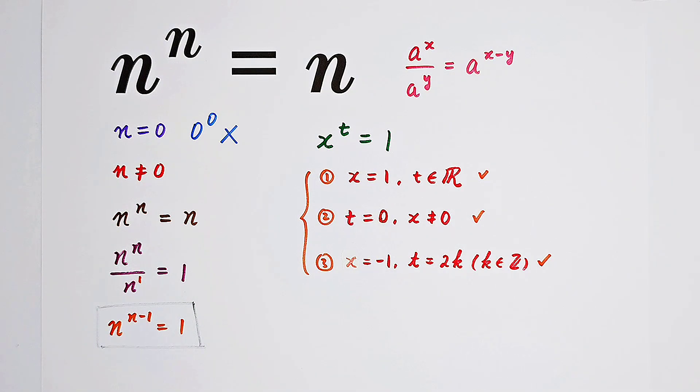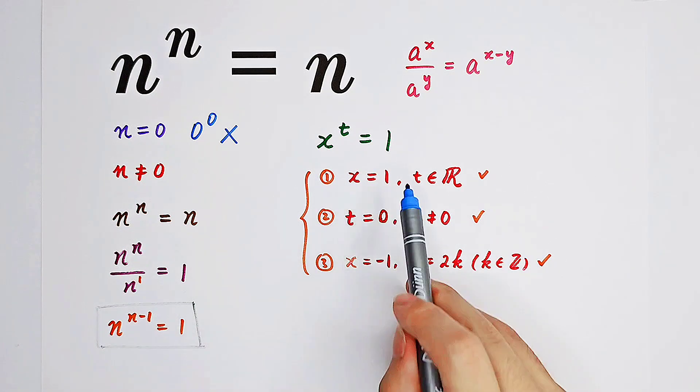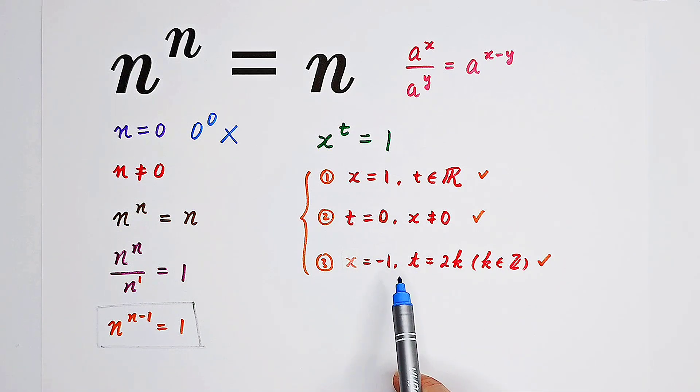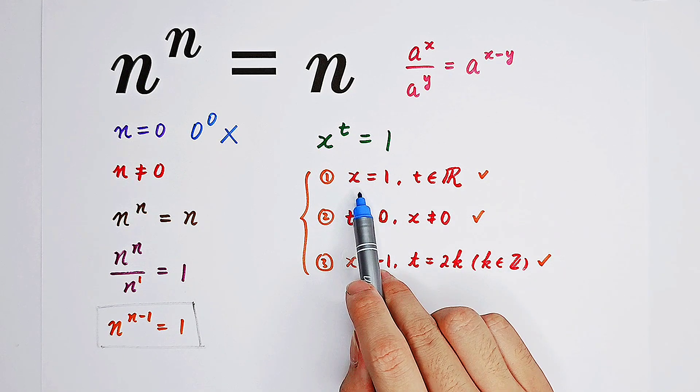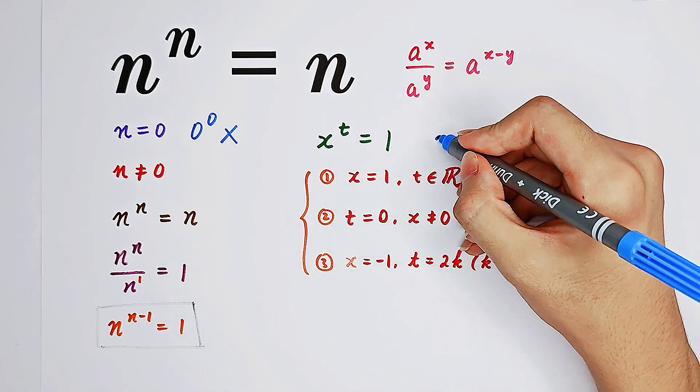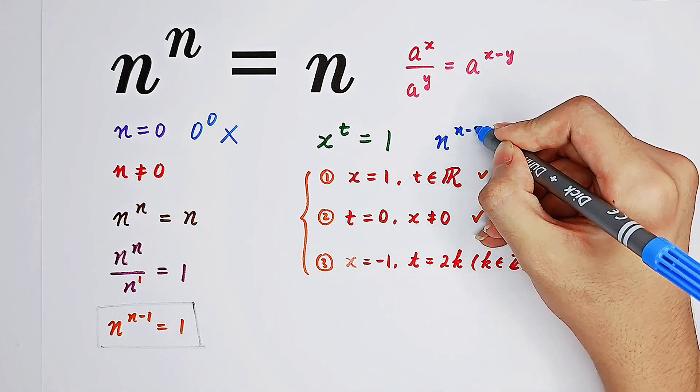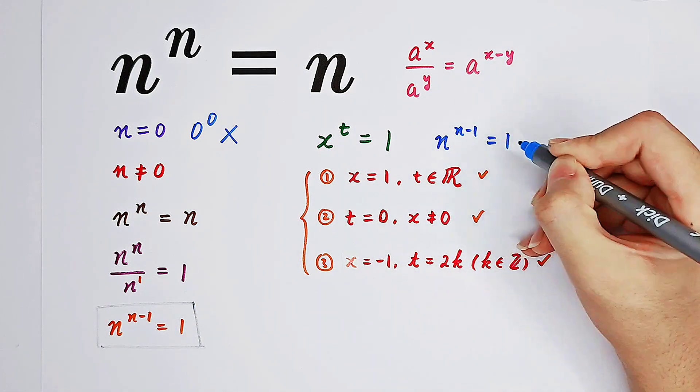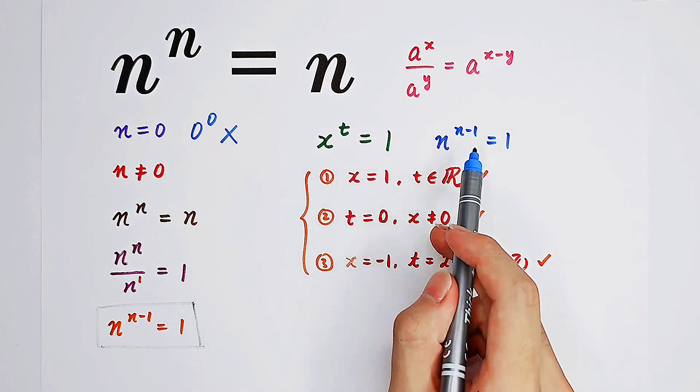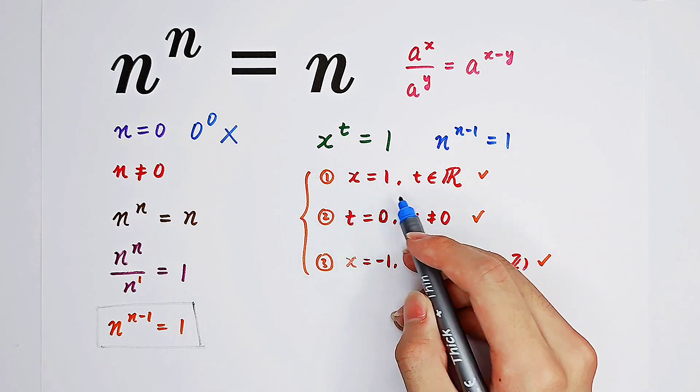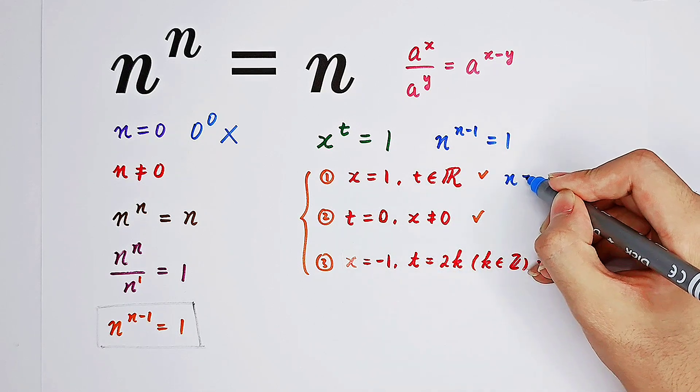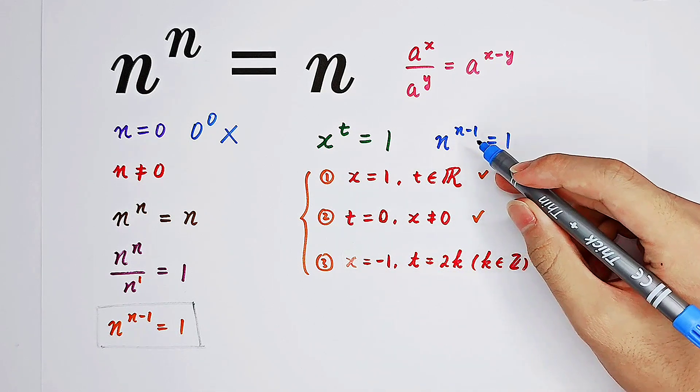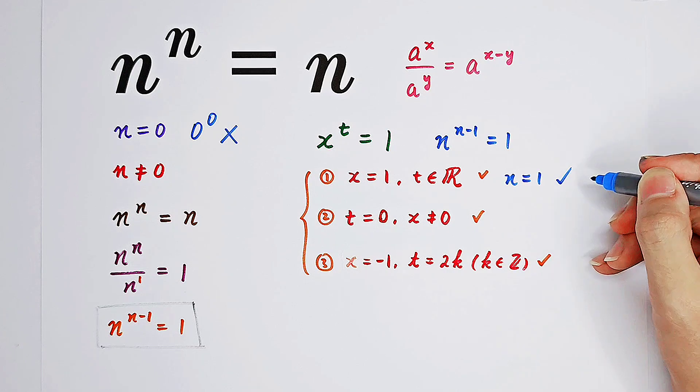So for our question, we also have to consider all these three cases. One by one, if x equals 1, because it's n to the power of n minus 1 equals 1, so n is x, t is n minus 1. So here, if the base equals 1, that means n is 1. Of course, n minus 1 is a real number. So it holds.